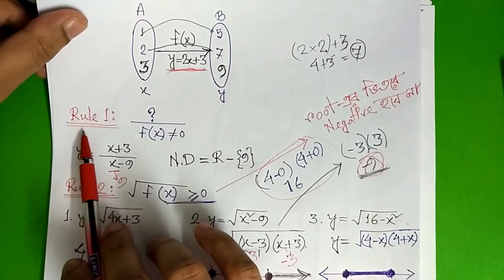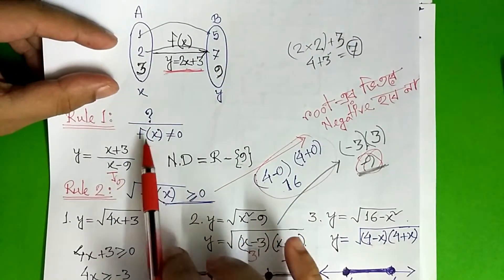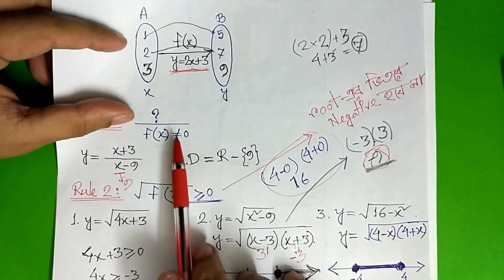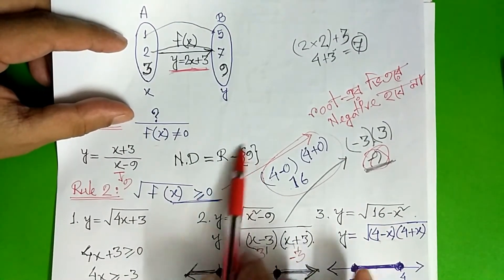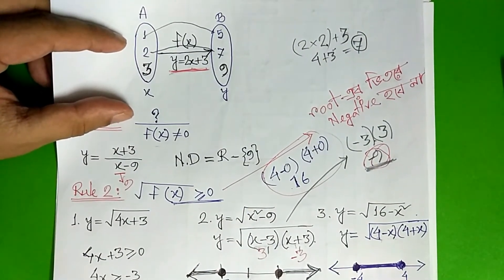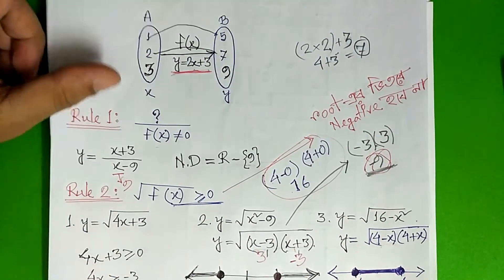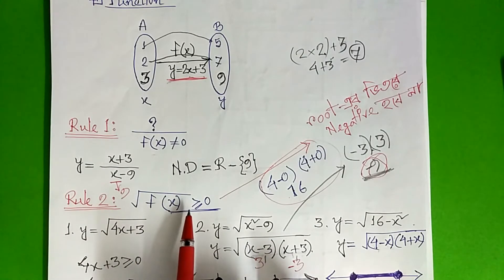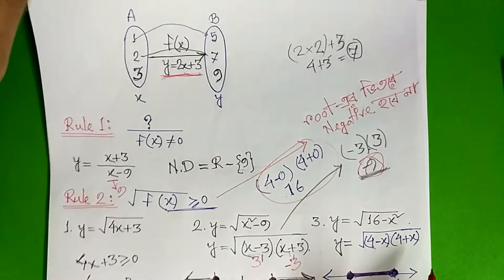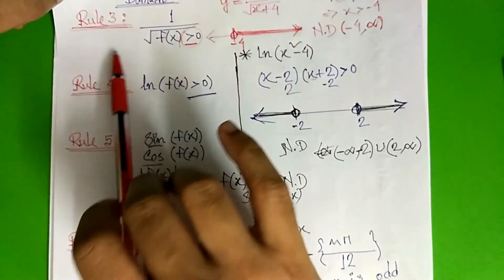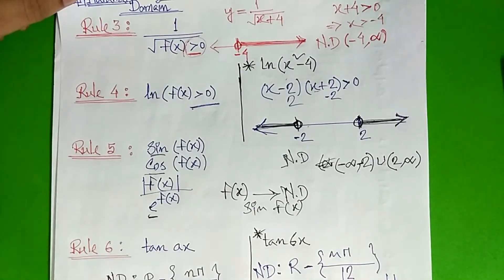Here we have a function to recap. Rule 01: each value maps to one value. Then the value comes back, and here is the value point. So this is the natural domain. Rule 2: we can take a root over b to the negative.